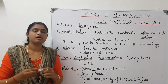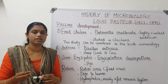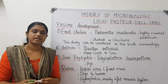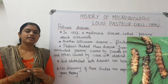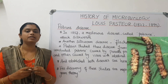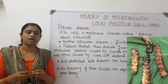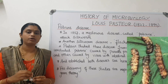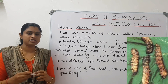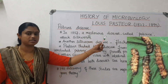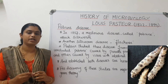Rabies affects the nervous system. One of the symptoms is hydrophobia. The virus affects the nervous system and ultimately causes brain death.